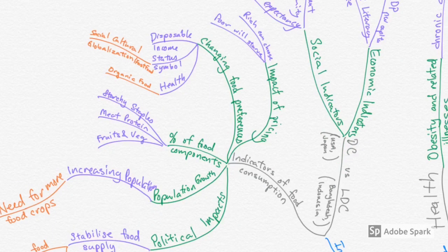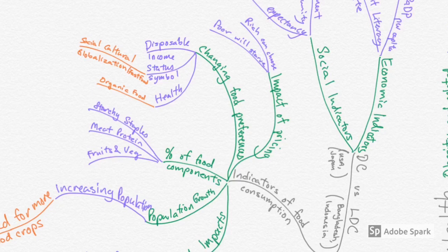Next up, we are going to look at the indicators of food consumption. Within this, there are five wings that we can look at: impact of pricing, changing of food preferences, percentage of food components, population growth, as well as political impacts. Now, I would like to start with the area of percentage of food components.